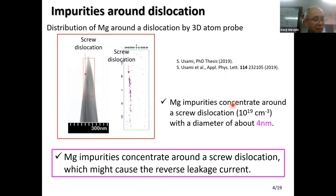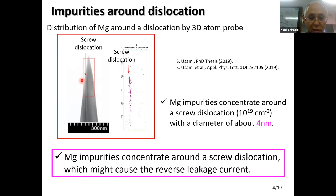More recent studies using three-dimensional atom probe tomography measurements show that magnesium concentrates around the dislocation. This dislocation line and the same-position image show that magnesium impurity is concentrated around the screw dislocation within about four nanometers. Therefore, magnesium and screw dislocations are possible origins of the leakage current.